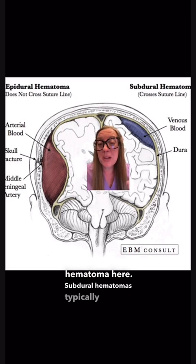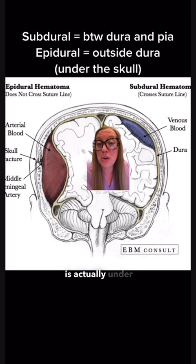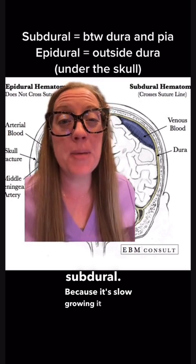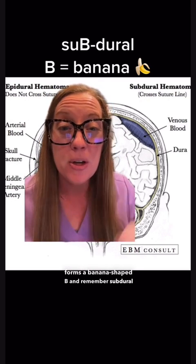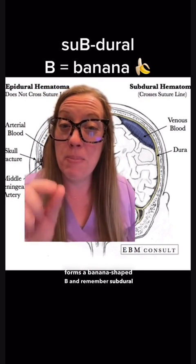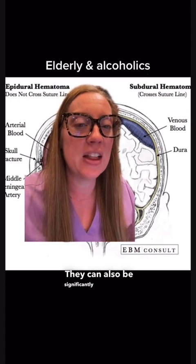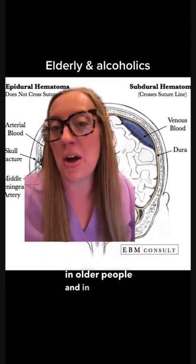Subdural hematomas typically happen when the venous structures that lie between the dura and the brain tear, and the bleeding is actually under the dura, which is why it's called subdural. Because it's slow growing, it typically forms a banana shape — remember subdural B for banana. They can also be significantly life-threatening but are more common in older people and in alcoholics.